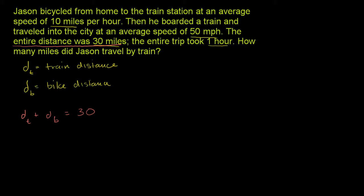As a bit of review, you're probably familiar with: distance is equal to rate times time. If you divide both sides of this equation by rate, you get time is equal to distance divided by rate.